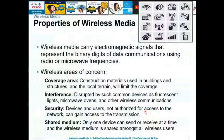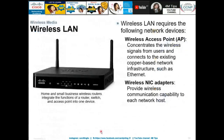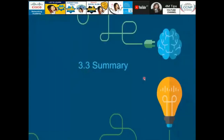Wireless media considerations include coverage area, interference, security, and shared medium. Different wireless standards support different speeds and different names. Wi-Fi wireless LAN standards vary by speed, and antenna-based devices also use wireless connectivity.